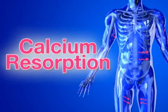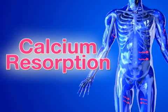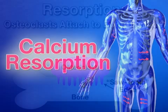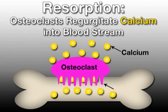When calcium sources in the blood run low, a normal process called resorption begins. Resorption steals calcium from bones to be recycled for use in other parts of the body. During resorption, scavenger cells with sawtooth membranes called osteoclasts attach to bone surfaces, tunnel into bone, and regurgitate calcium into the bloodstream for use by other body parts.